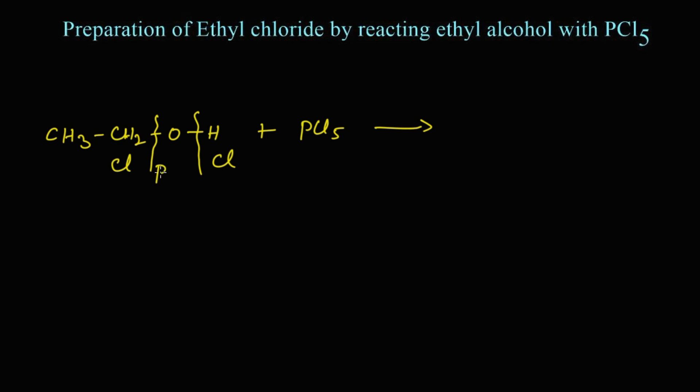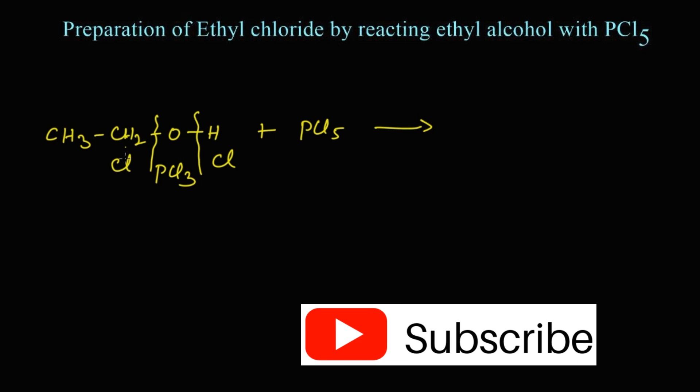So we get CH3-CH2-Cl, that is chloroethane, or else ethyl chloride - CH3-CH2-Cl.